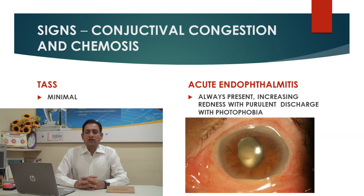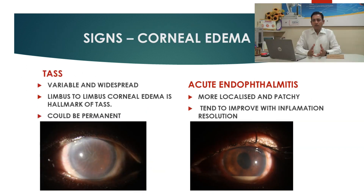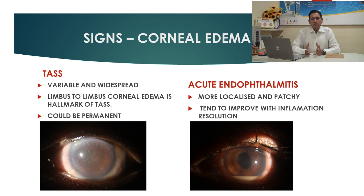Signs like conjunctival congestion and chemosis are more often seen in endophthalmitis cases, while in TASS these signs are minimal. Corneal edema in TASS is widespread — it is the hallmark of TASS — with diffuse total corneal edema from limbus to limbus, whereas corneal edema in endophthalmitis will be localized and more patchy.